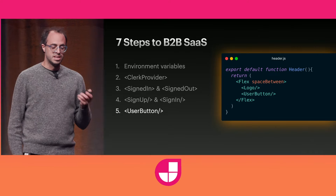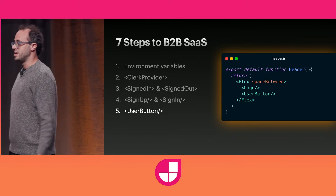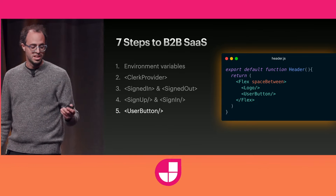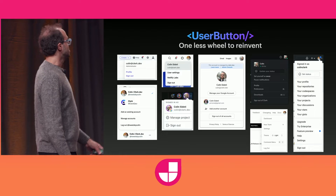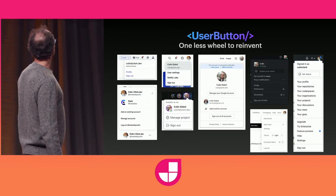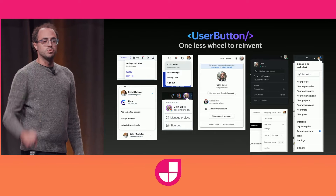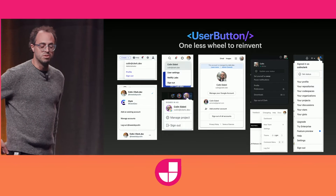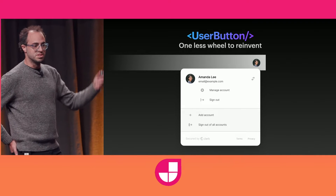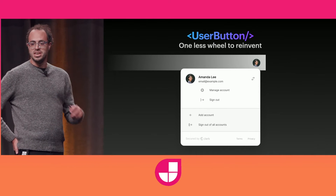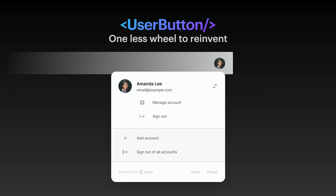So that was sign-up and sign-in. Next step is the user button. You've almost certainly seen them before — it's that thing in the top right of a million different websites. I took Stripe, Twitter, Google, Netlify as examples. You click it and it's the waypoint to signing out and managing your profile. We actually built in the Google functionality of being able to sign in to multiple accounts at once. You just drop that user button in your header and you get everything you need.